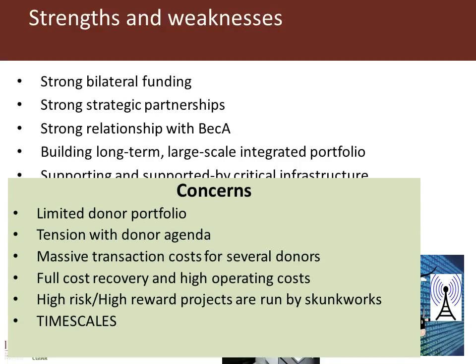So what are our problems and weaknesses? We have a more limited donor portfolio than I would like — we're rather heavily reliant on one or two donors. Occasionally we see tension with the donor agenda, and the debates to align what we think needs doing with what they want to fund can sometimes be quite entertaining. Some of those donors bring massive transaction costs. Like everybody else, we have the problem of meeting full cost recovery and high operating costs. We have the challenge of funding really high-risk, high-reward, off-the-wall projects — those are sometimes run as weekend projects or skunk works. And we're dealing with long timescales, particularly in the genetics and genomics areas; delivery is inevitably slow, and donors sometimes struggle to grasp that.